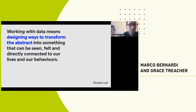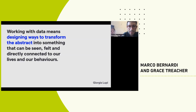Giorgia Lupi's quote is probably the most representative of her approach: 'Working with data means designing ways to transform what is abstract into something that can be actually seen, felt and directly connected to our lives and our behaviours.' Especially the last part — directly connected to our lives and our behaviours — is particularly important, because in the end data is something we invented because we want to be in control and quantify everything. But if we always keep in mind that data is connected to something real, that helps to create something beautiful.